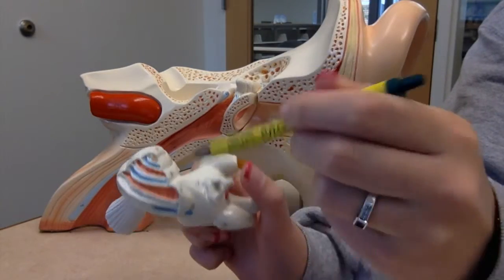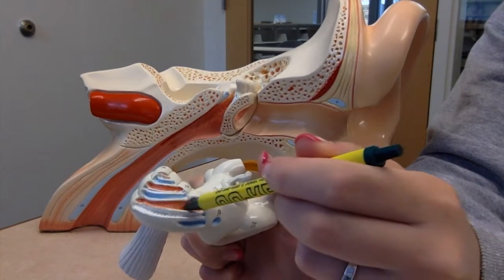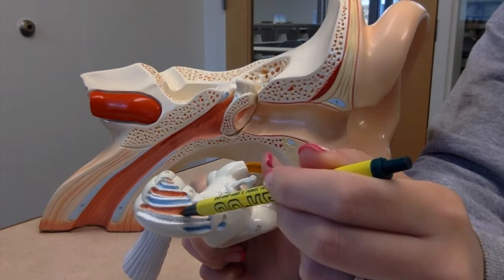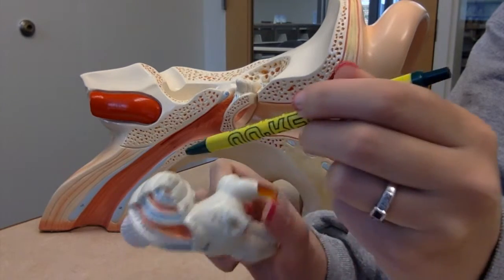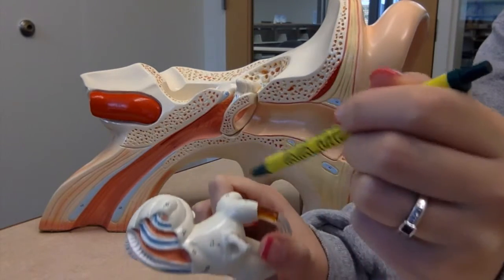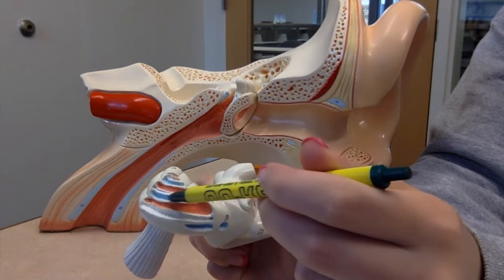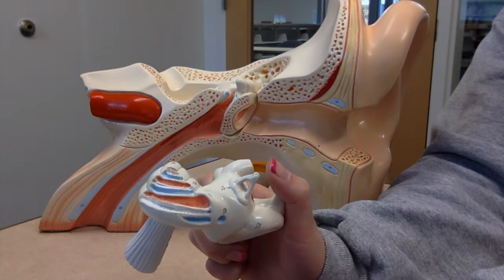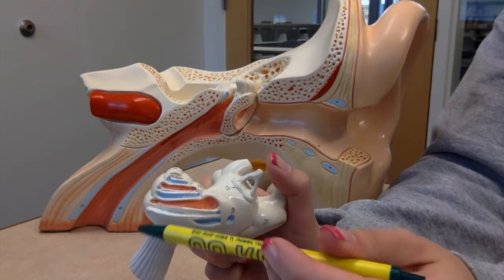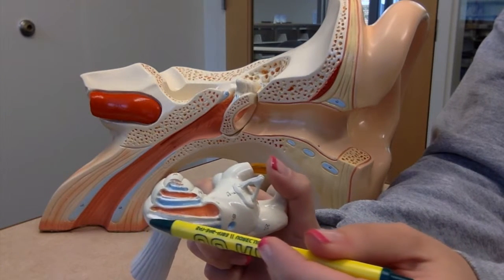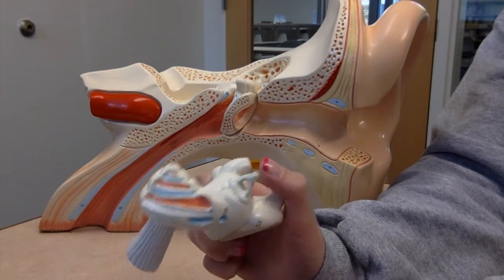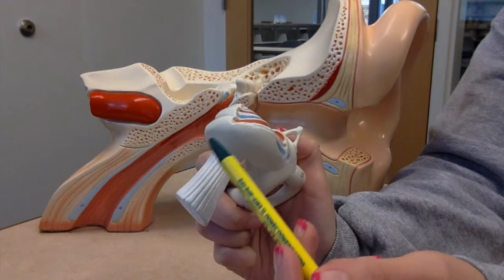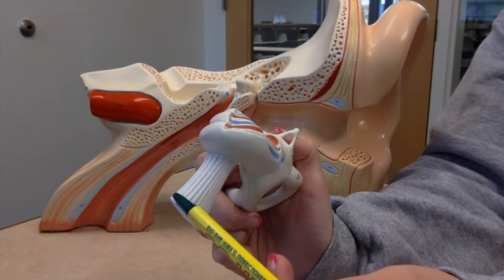Here is the cochlea. The orange canal is called the scala vestibuli, and that's the canal that goes upwards until it hits the apex or the helicotrema. The blue canal is the scala tympani, which is the canal that goes downwards and out the round window. The canal in the middle is called the scala media or the cochlear duct. Then that signal is sent from the top and it goes out the cochlear nerve.